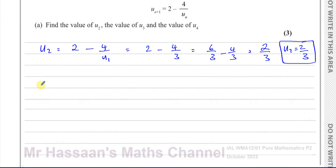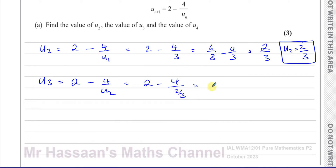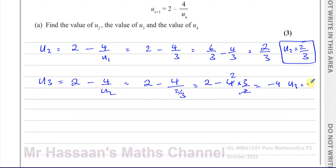To find u3, you have 2 minus 4 over u2, which is 2 minus 4 divided by 2 thirds. When you divide by a fraction, you multiply by its reciprocal. So it's going to be 2 minus 4 times 3 over 2. The 2 and the 4 cancel to give you 2, so you have 2 minus 6, which is negative 4. So u3 is equal to negative 4.